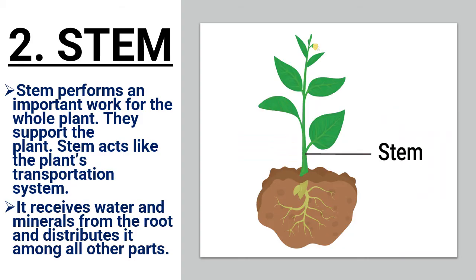The second part of the plant is the stem. The stem performs an important job for the whole plant. It supports the plant. The stem acts like the plant's transportation system — it receives water and minerals from the root and distributes them among all the parts.